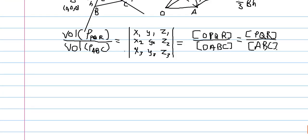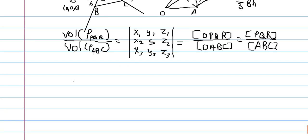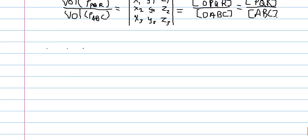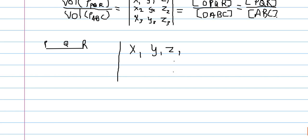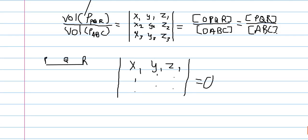There are more corollaries. If three points are collinear, then the triangle they form is degenerate — the triangle has area zero. So if we have points p, q, and r that are collinear, then the matrix with rows (x1,y1,z1), (x2,y2,z2), (x3,y3,z3) has determinant equal to zero, because the area of p,q,r equals zero.